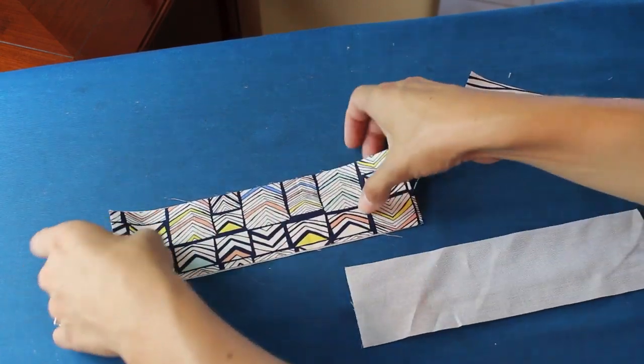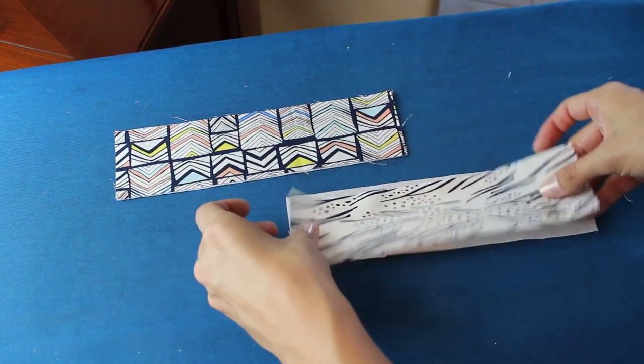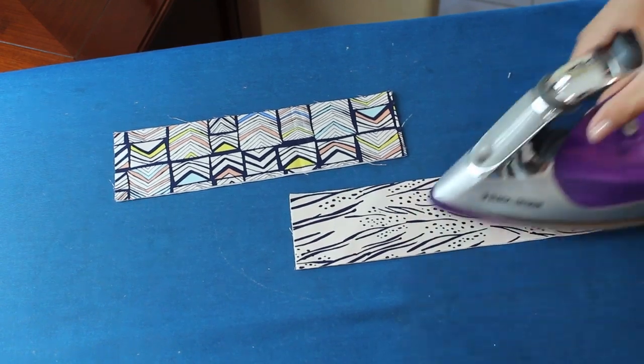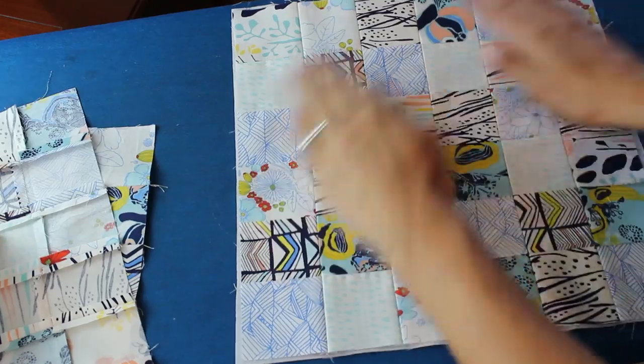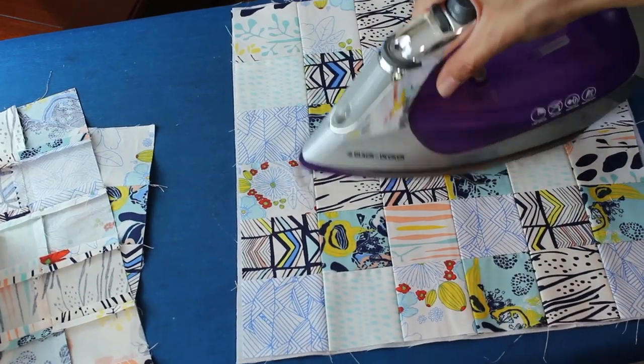You want to make sure that you have the fusible side up onto the wrong side of your fabric and go ahead and get those nice and fused together. Those pieces measure two and a half by nine and don't forget I will have all the measurements below.